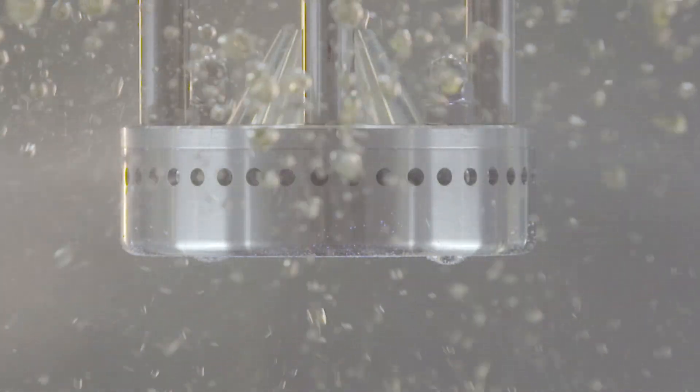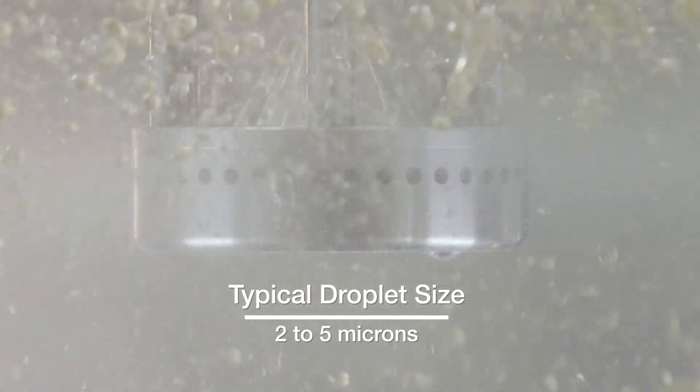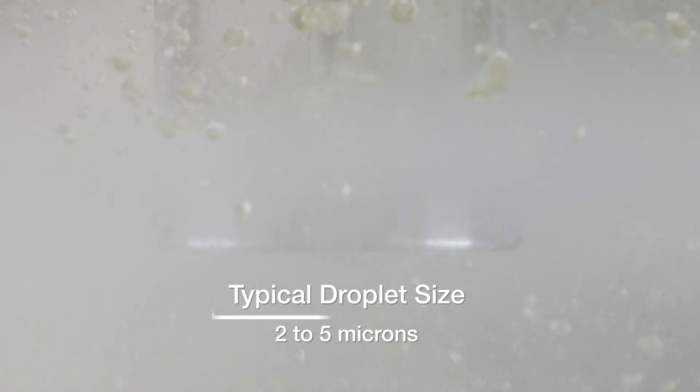A Silverson mixer can easily create an emulsion with a droplet size of 2 to 5 microns. Finer emulsions down to 0.5 microns can also be obtained depending on the formulation.